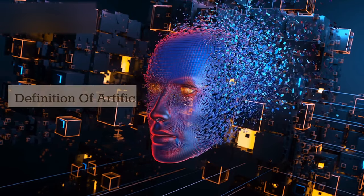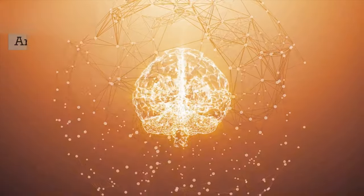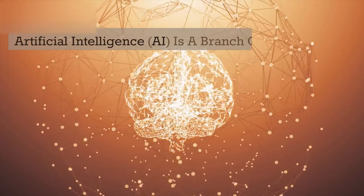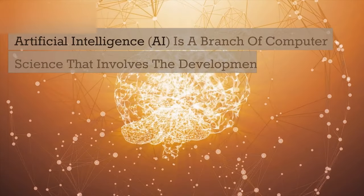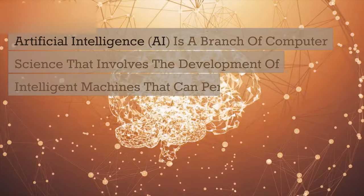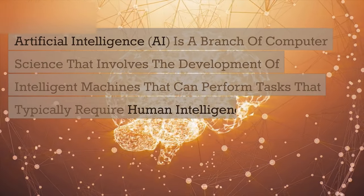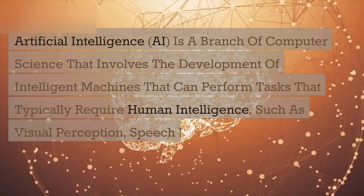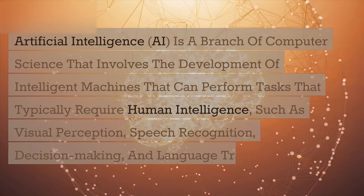Definition of Artificial Intelligence. Artificial Intelligence, or AI, is a branch of computer science that involves the development of intelligent machines that can perform tasks that typically require human intelligence, such as visual perception, speech recognition, decision making, and language translation.